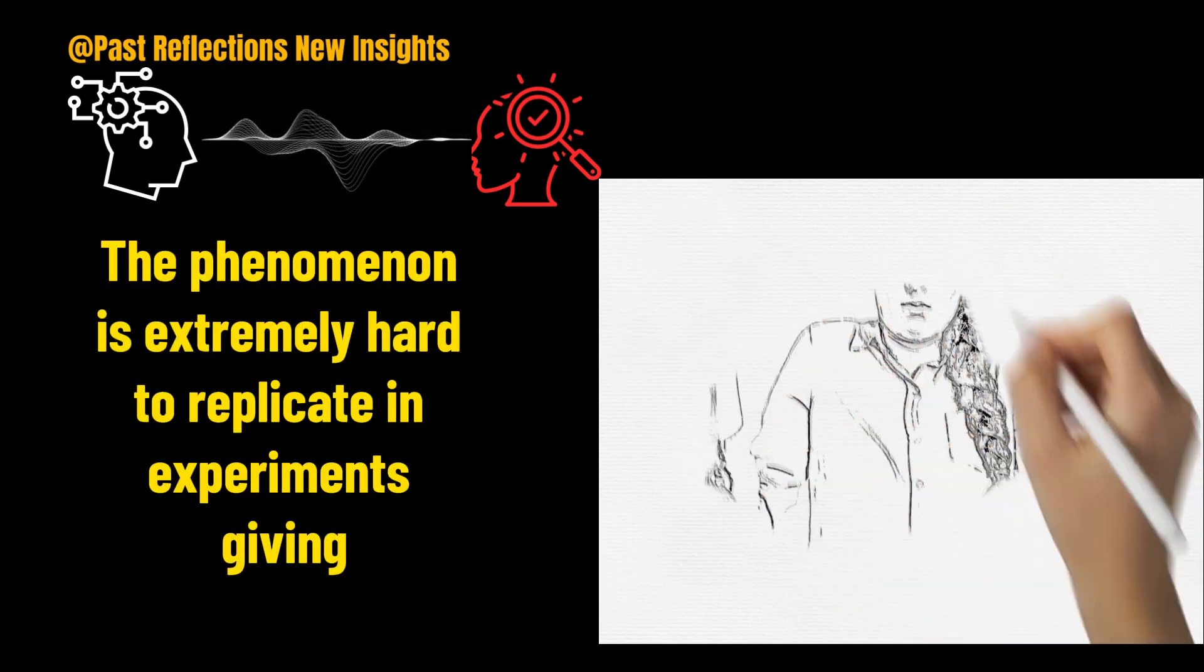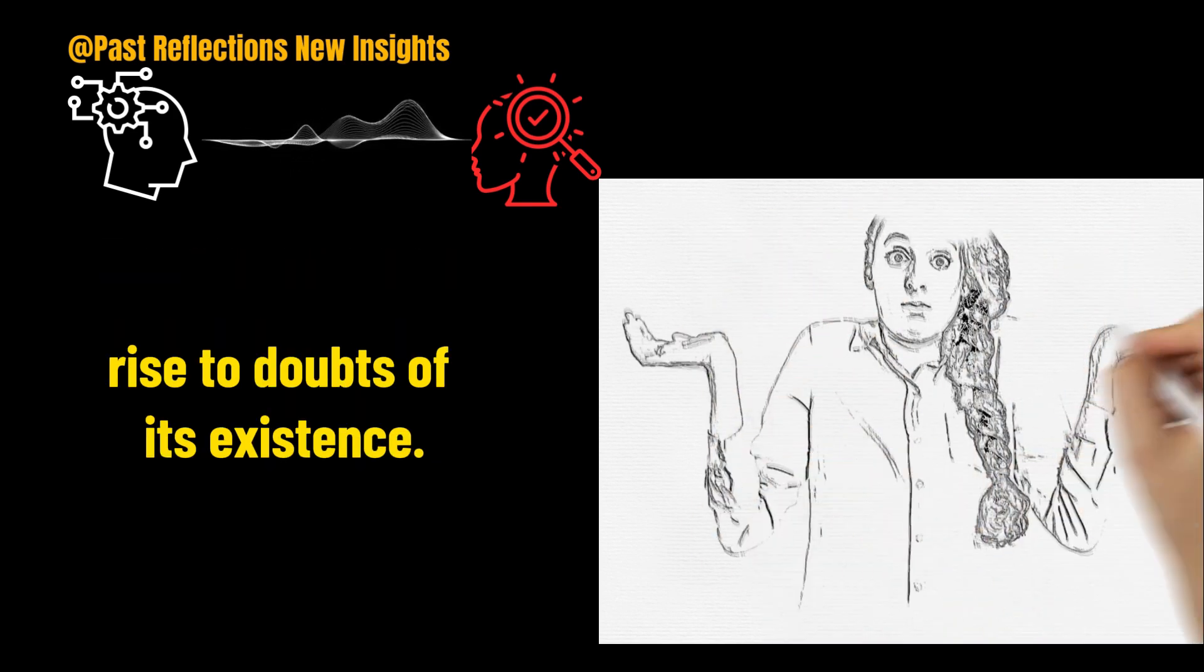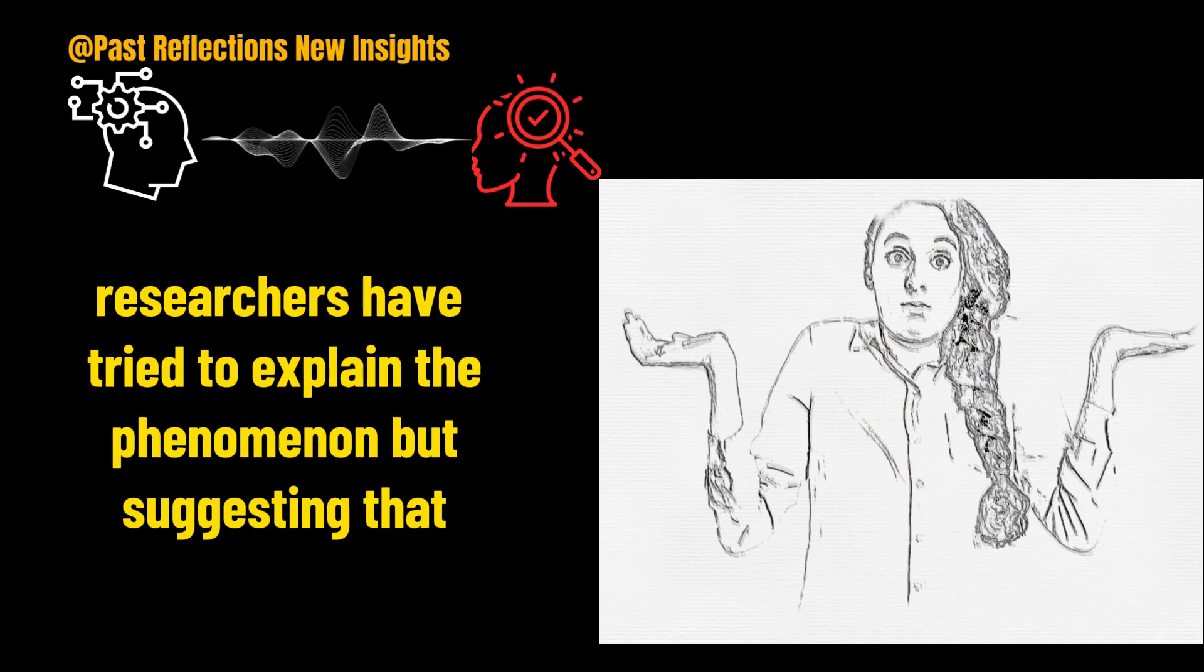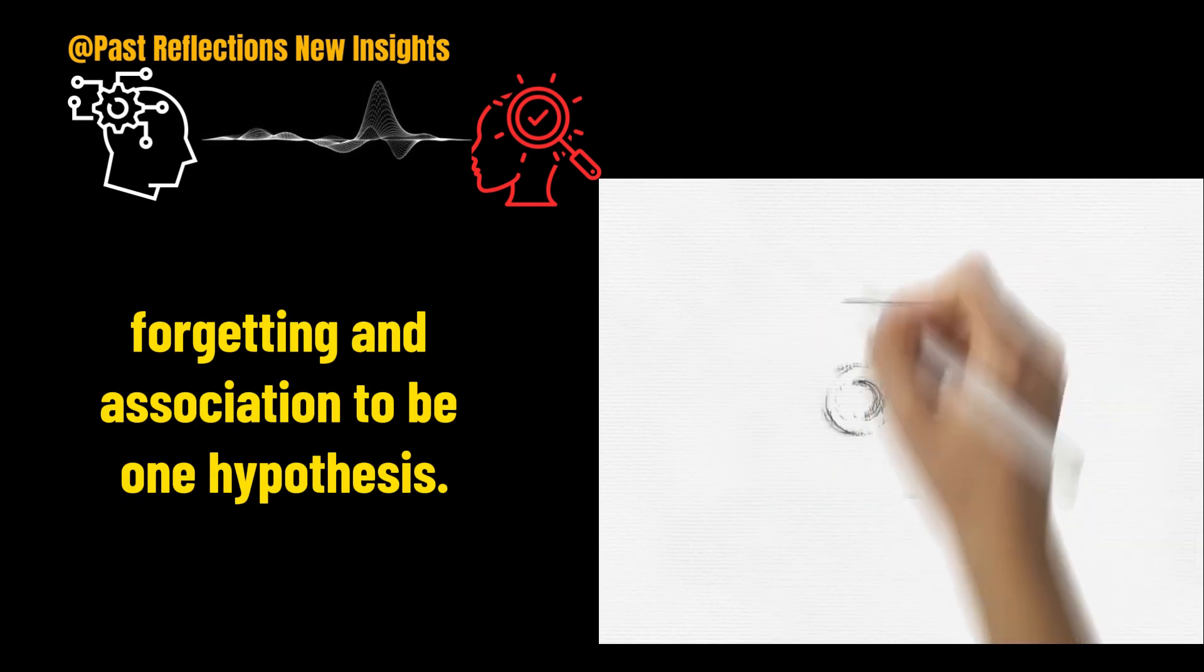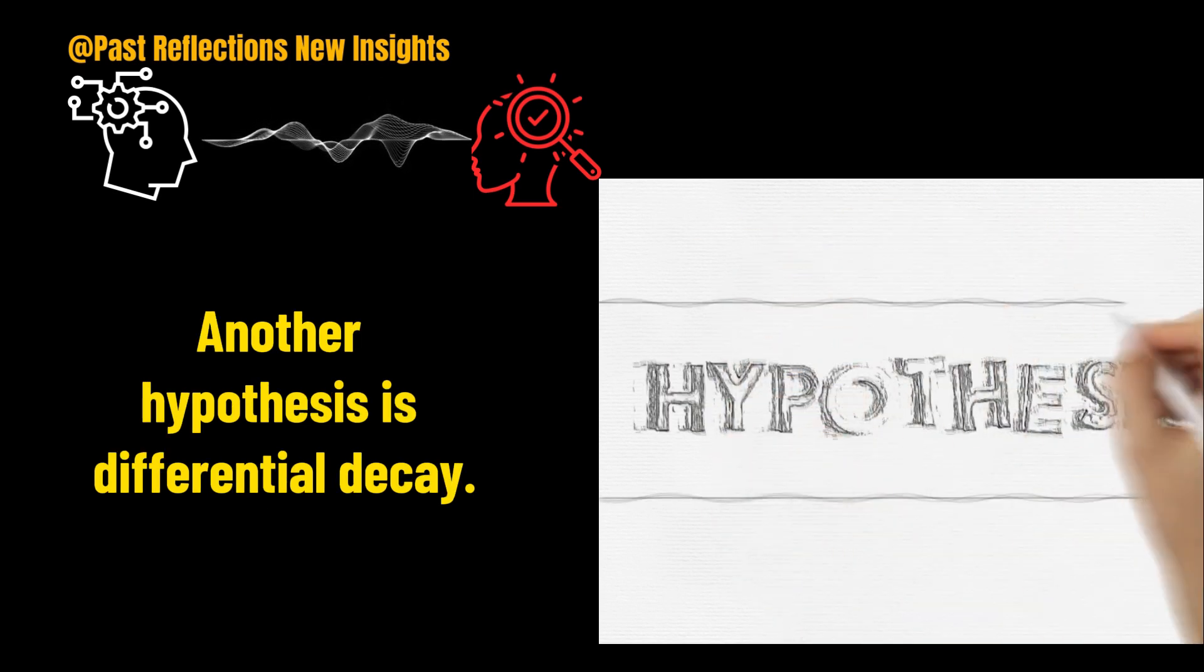The phenomenon is extremely hard to replicate in experiments, giving rise to doubts of its existence. Nevertheless, researchers have tried to explain the phenomenon by suggesting that forgetting and dissociation to be one hypothesis. Another hypothesis is differential decay.